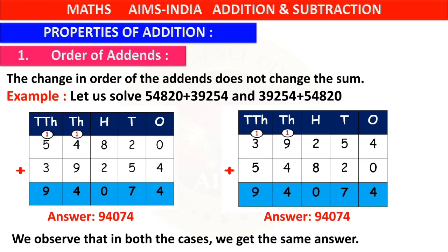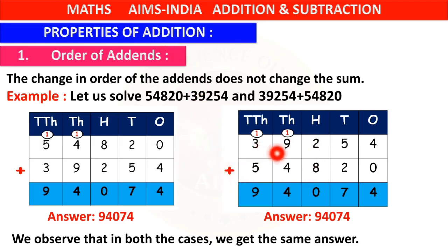Now moving on to today's topic — properties of addition. We already know what addition is: when we add two numbers it is called addition. The numbers we are adding are called addends, and the answer we get from addition is our sum.